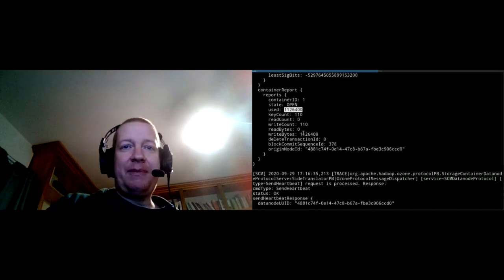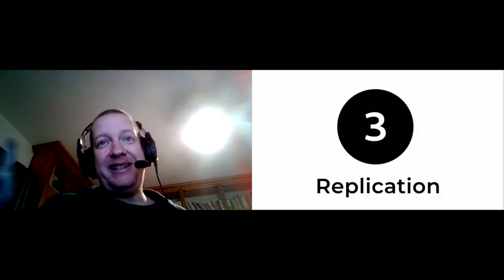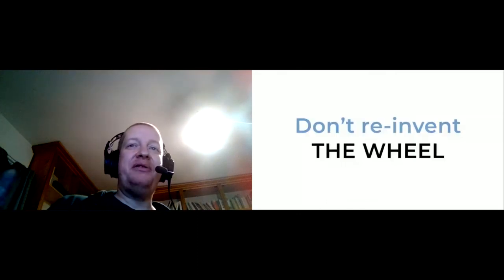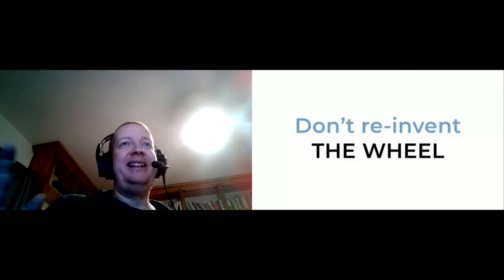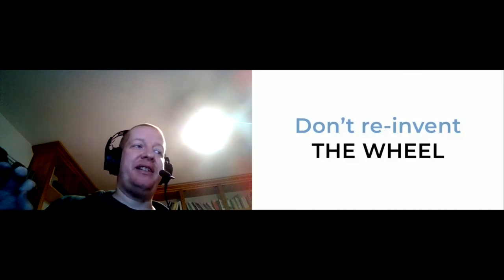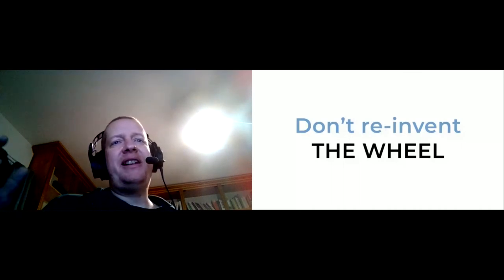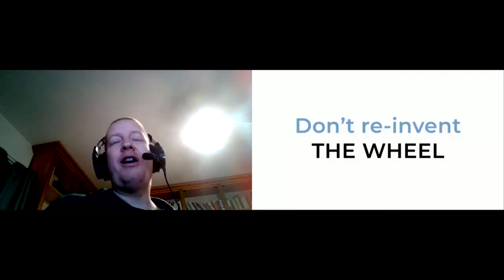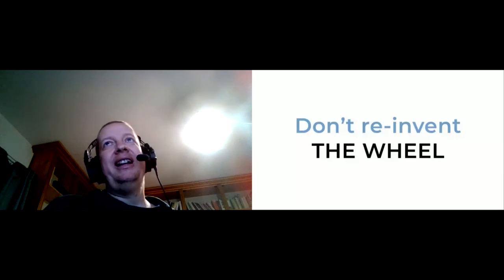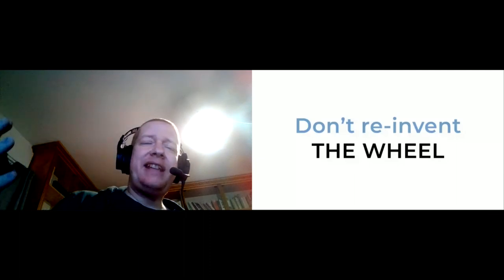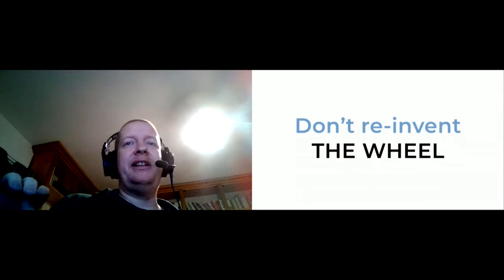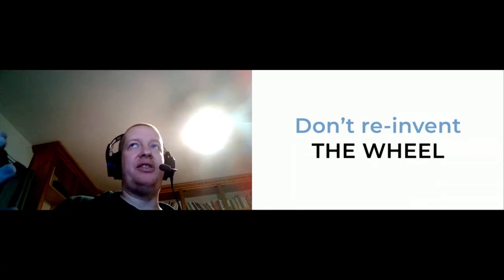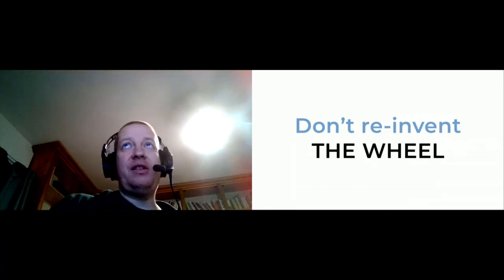The third difference — and actually an important rule of Ozone development — is that we don't reinvent the wheel. That's very important because writing a new storage system is already very complex, so it's better to reuse existing technologies and well-known solutions. When we replicate data, we need to replicate two parts: the actual data (byte array) and some kind of metadata (block information).